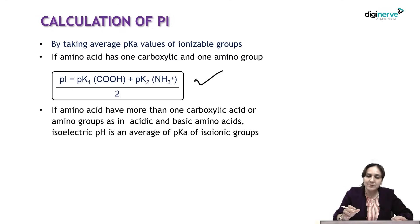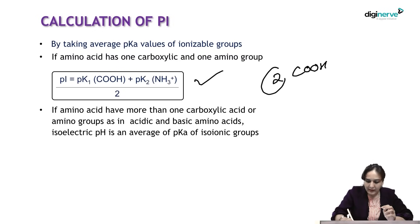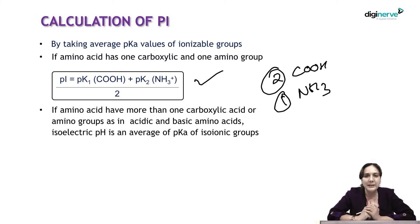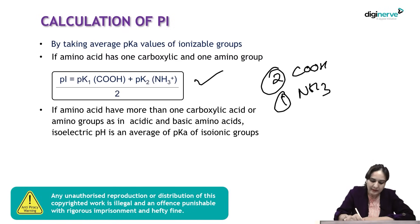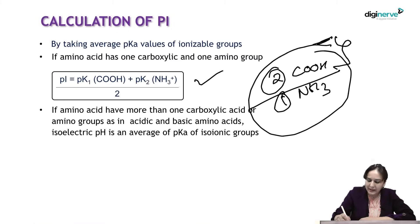For amino acids with more than one carboxylic acid group — such as acidic amino acids — the pI calculation differs. If an amino acid has two carboxylic acid groups and one amino group, we ignore the amino group and instead take the average of the pKa values of the two carboxylic acid groups to calculate the pI.